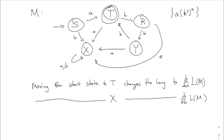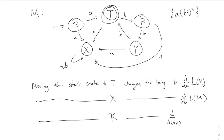Similarly, moving the start state to X changes the language to the derivative with respect to 'b', because when you move through the 'b' arrow it takes the derivative with respect to 'b'. And if I move the starting state to R, that involves going through an 'a' and then through a 'b' on the diagram. So this is like taking the derivative with respect to 'a' and then with respect to 'b' — we write it as the derivative with respect to 'ab' of the language.